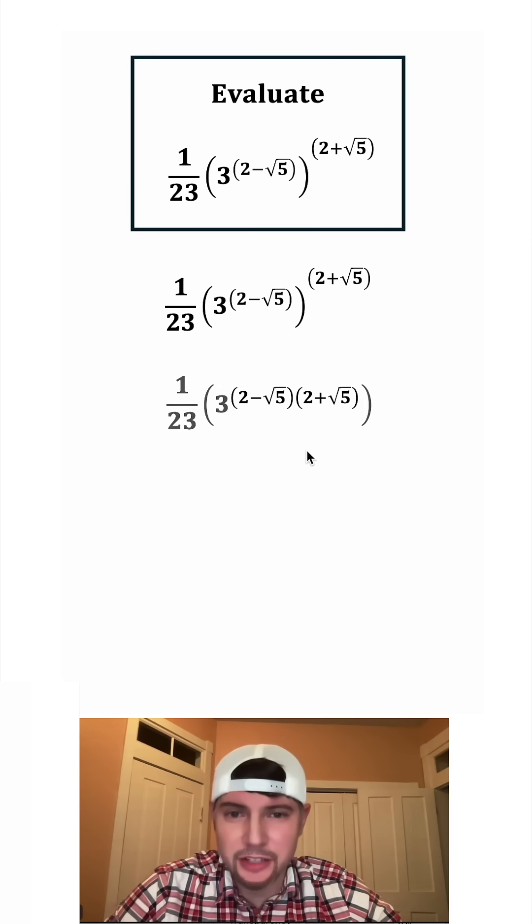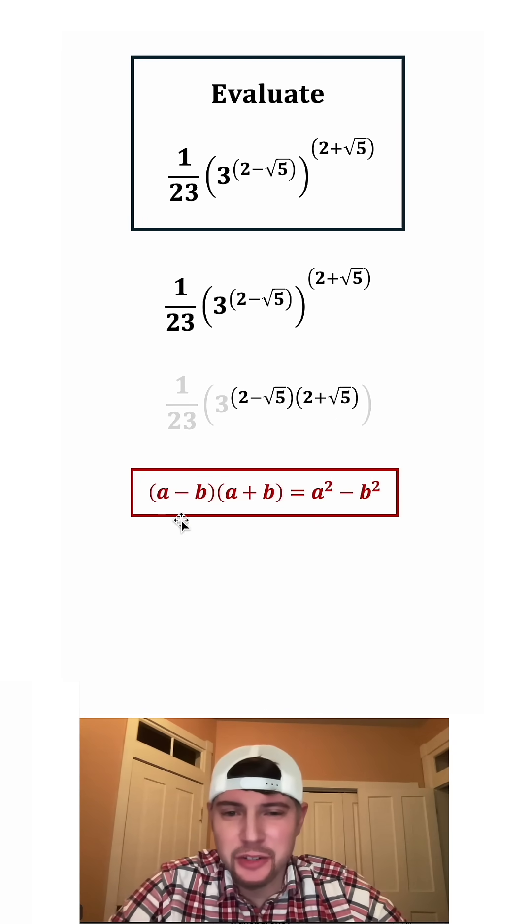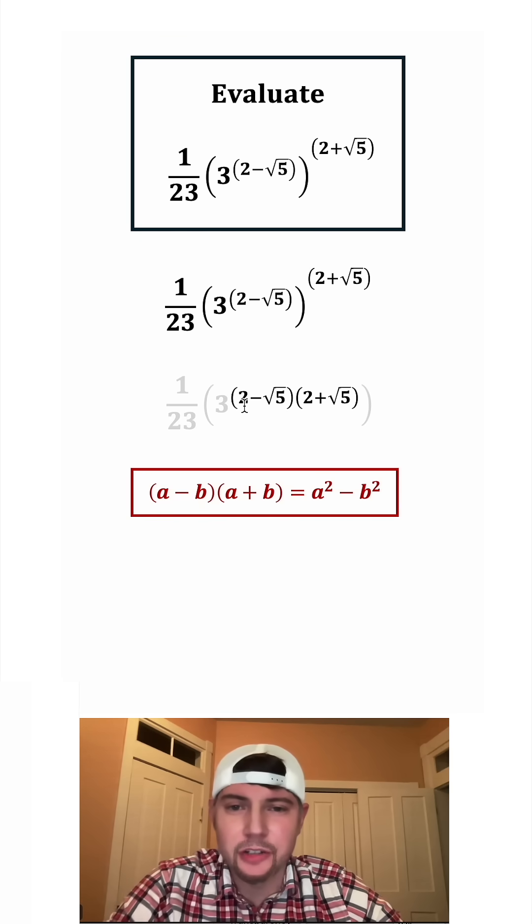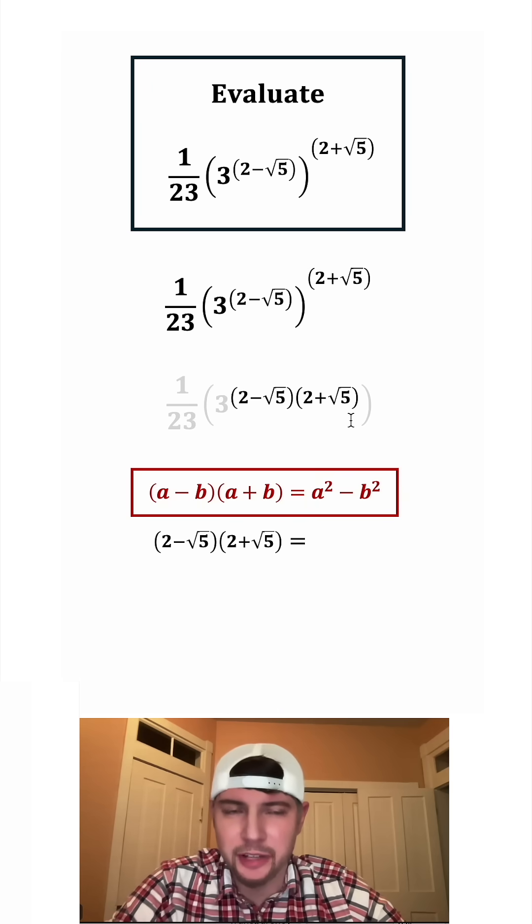So let's focus on multiplying these two terms. And to do this, we can use these notes as a shortcut. Anytime you have A minus B times A plus B, it's just A squared minus B squared. So that's exactly what we have right here, 2 minus root 5 and 2 plus root 5.